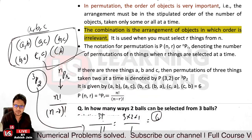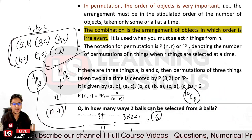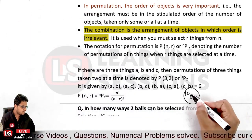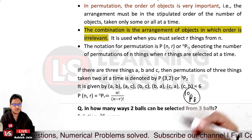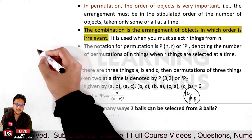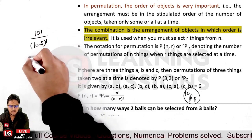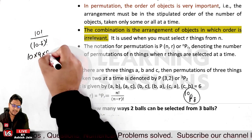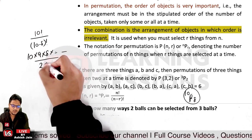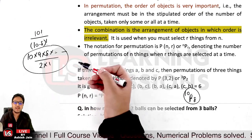For example, if I have 10 balls and need to select 8, the number of permutations is 10P8. Using the formula, that is 10 factorial divided by (10 minus 8) factorial, which is 10 factorial divided by 2 factorial. We multiply all terms to get the total number of permutations.